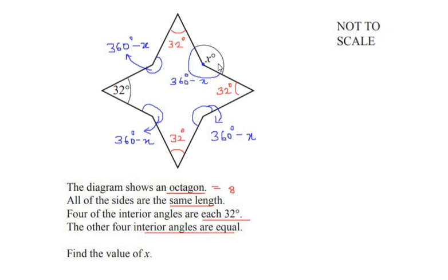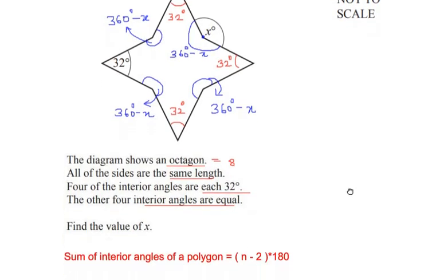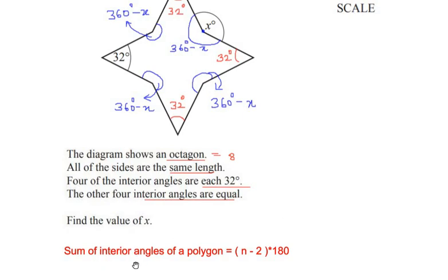So now to find out the value of x, let us use a formula for the sum of the interior angles of a polygon. So it is given as sum of interior angles of a polygon is equal to (n - 2) times 180 degrees. So here the n stands for the number of sides of any polygon. Since here we have an octagon, we are going to take n is equal to 8.